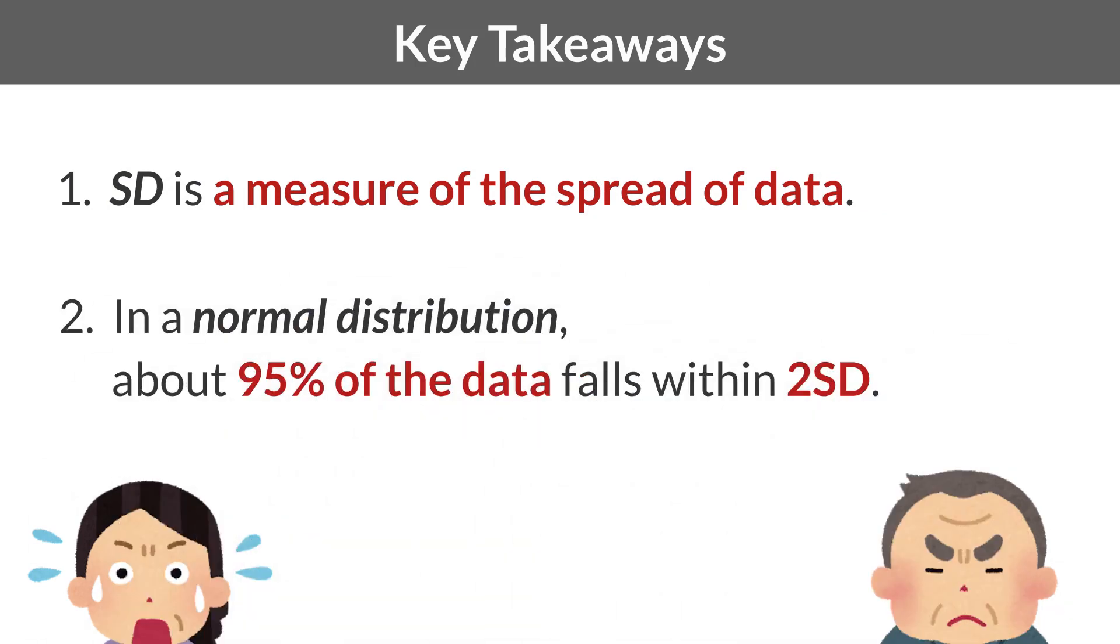Two: In a normal distribution, about 95% of the data falls within two standard deviations. Let's look at these in order.